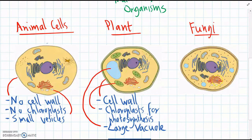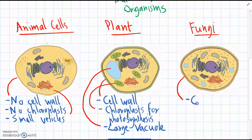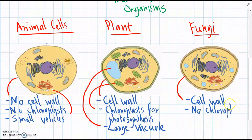The last cell type is fungi — the mushrooms, molds, and yeasts. Fungi are a bit of a combination between animals and plants. We can see they do have a cell wall around the outside; it's made of different chemicals, but it's still a rigid cell wall. Fungi don't do photosynthesis though, so we can't see any chloroplasts. And lastly, where we can see vesicles, they're small, similar to an animal cell — fungi don't have a giant vacuole.